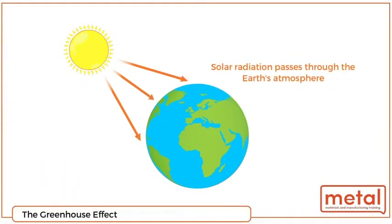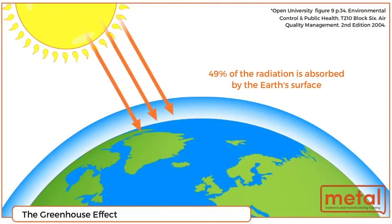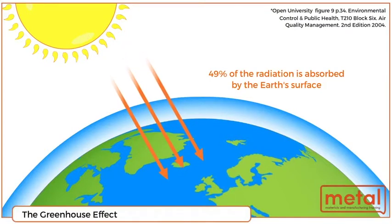Our star, the Sun, releases phenomenal amounts of energy. This energy makes its way through space and falls onto Earth. This solar radiation passes through the Earth's atmosphere, and some portion of this energy is absorbed by the atmosphere on entry.